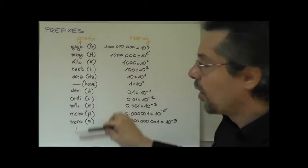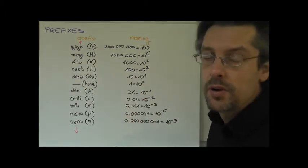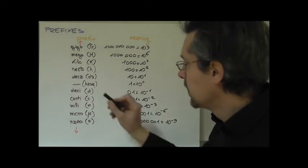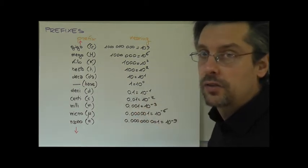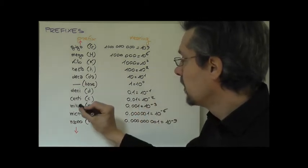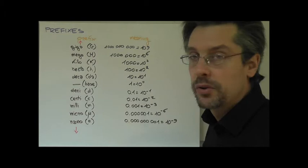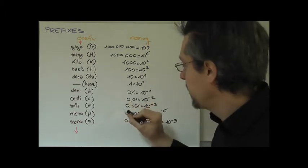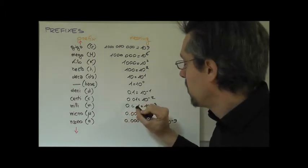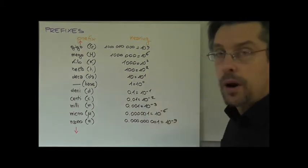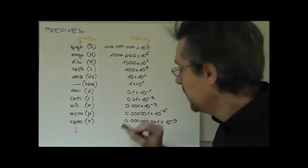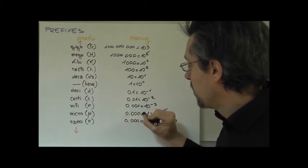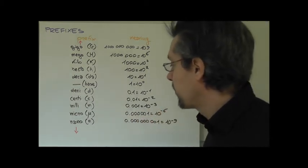This table also goes for numbers which are lower than 1. We start with the deci, D, stands for 0.1, or 10 to the power of minus 1. The centi, symbol C, as in centimeter, which is 0.01, or 10 to the power of minus 2. The milli, symbol M, 0.001, or 10 to the power of minus 3.